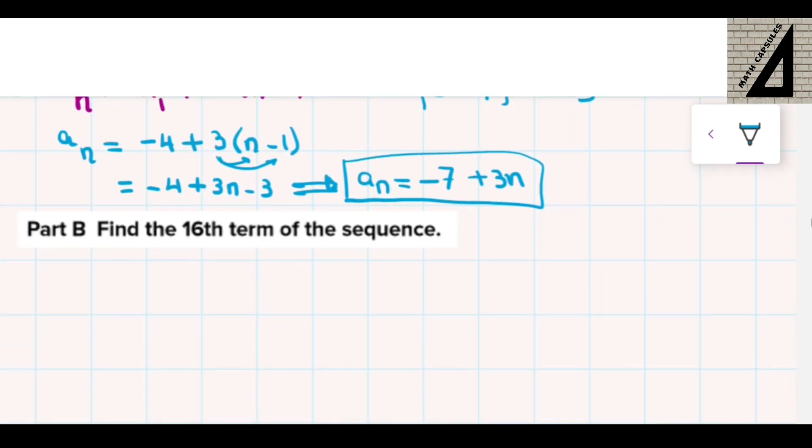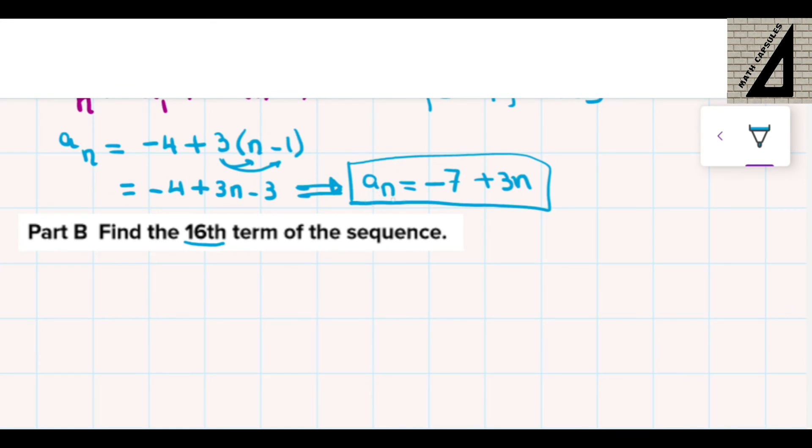Let's find part b. Part b says find the 16th term of the sequence. I can find the 16th term by substituting n by 16. So n equals 16.